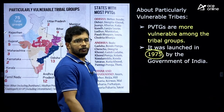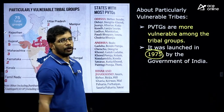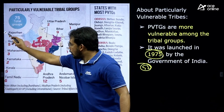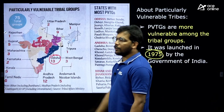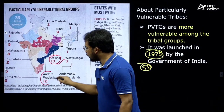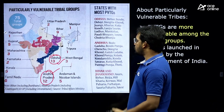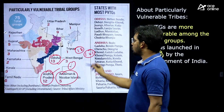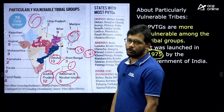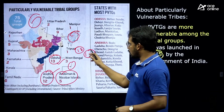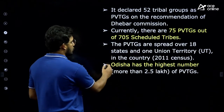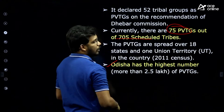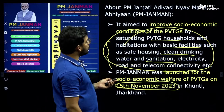Out of 700+ tribal groups, 75 are identified as Particularly Vulnerable Tribal Groups. This classification was launched in 1975 — initially 52 groups were identified, now it is 75. Odisha has the highest number at 13, followed by Andhra Pradesh. PVTGs are spread across 18 states and one Union Territory — Andaman and Nicobar Islands. Some states have no PVTGs at all.